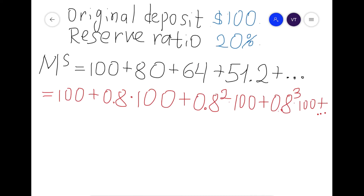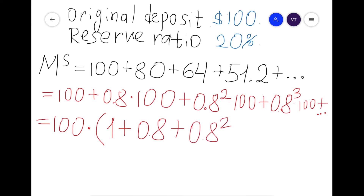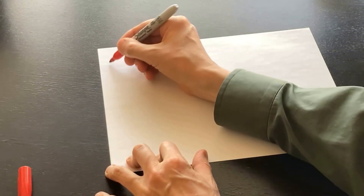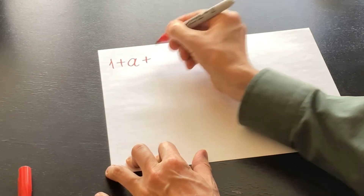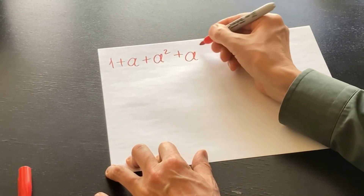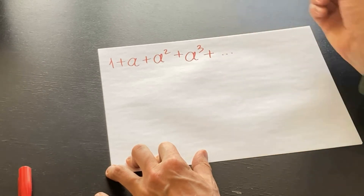Now we have this sequence and we can do some basic math. We collect the terms: 100 times the bracket (1 + 0.8 + 0.8² + 0.8³ + …) continuing to infinity. Mathematics gives us a tool to sum this kind of series.